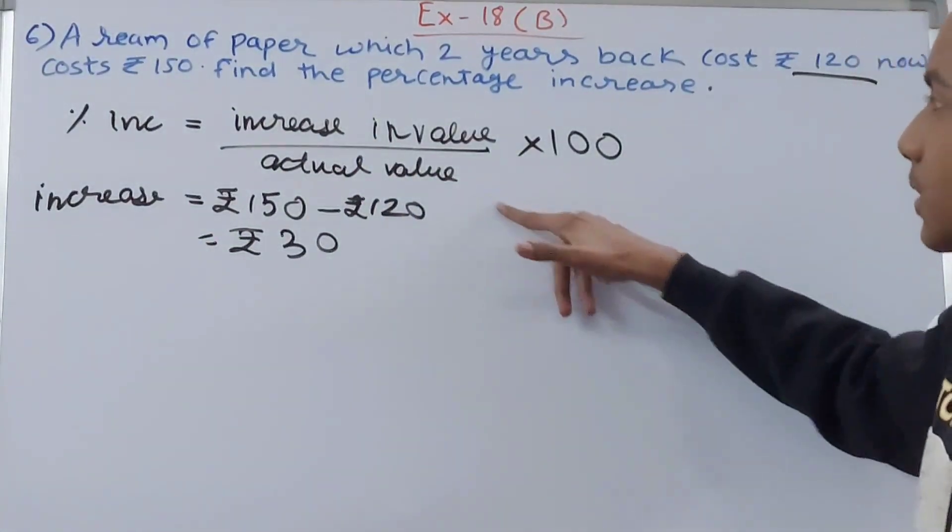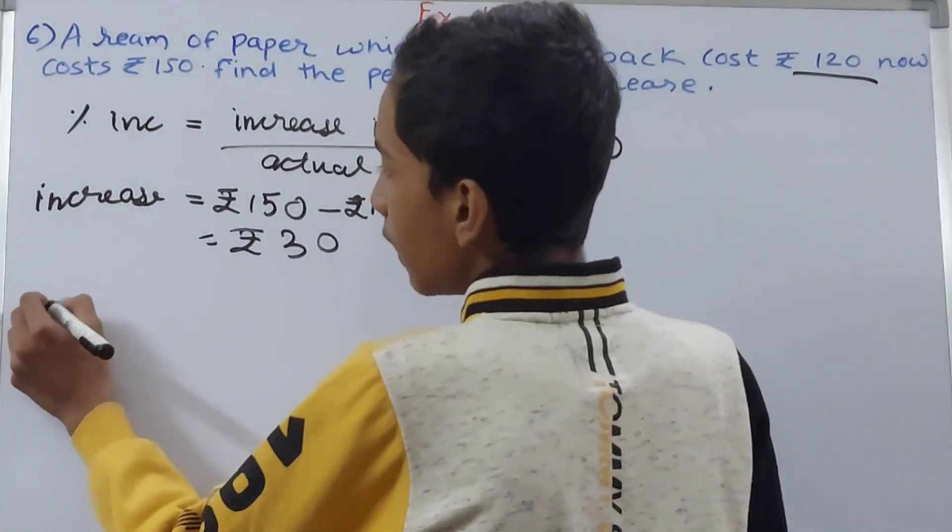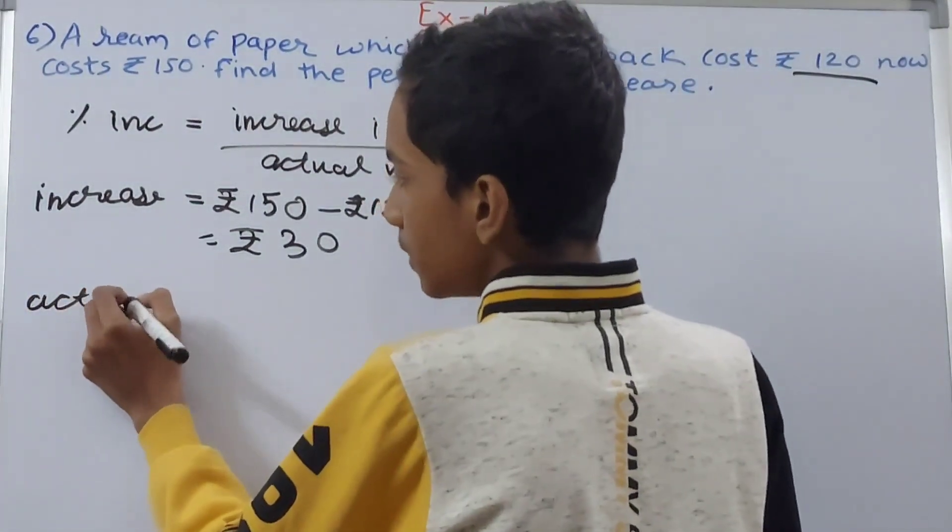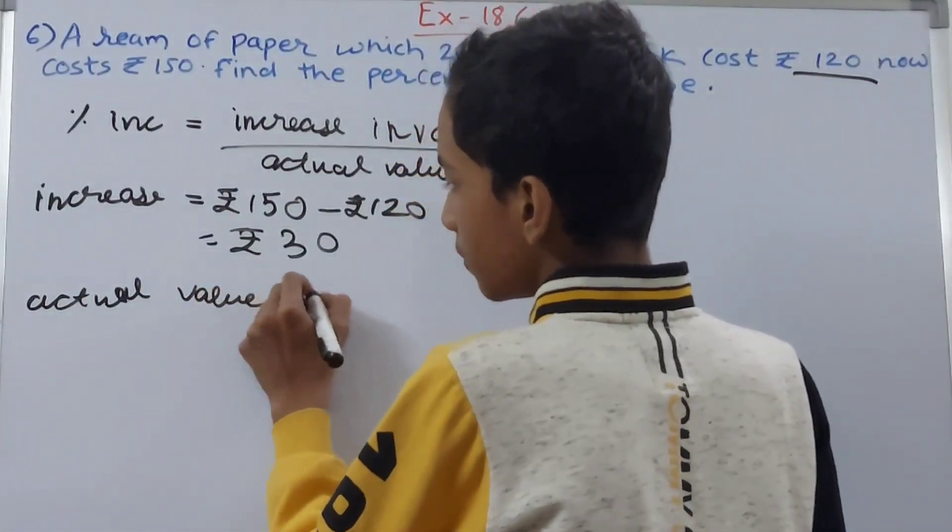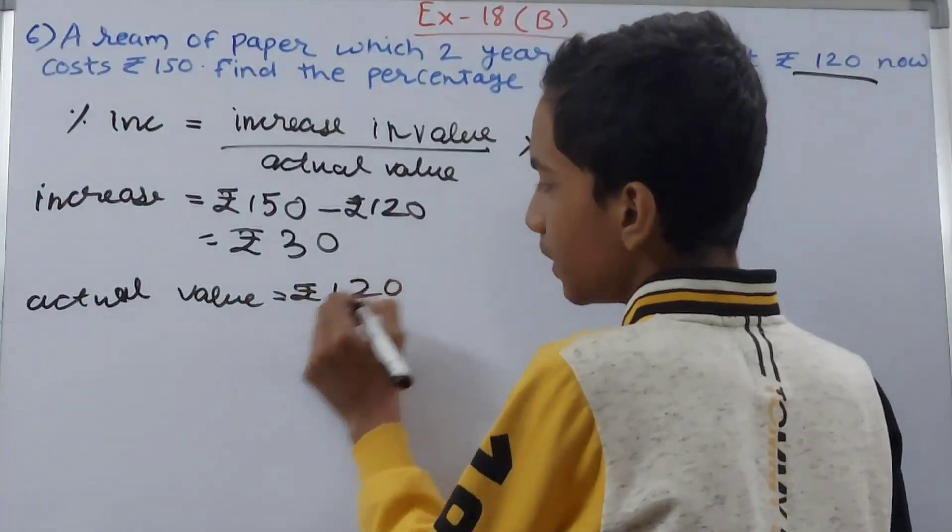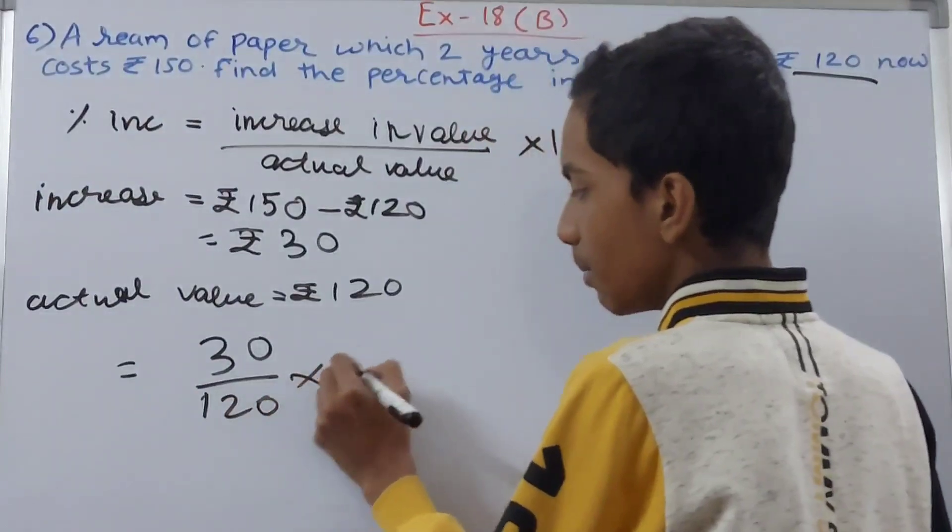The actual value that was given was rupees 120. So the percentage increase becomes 30 upon 120, and then multiply by 100.